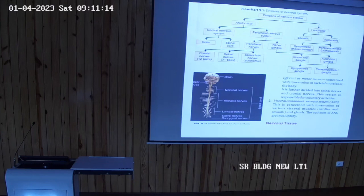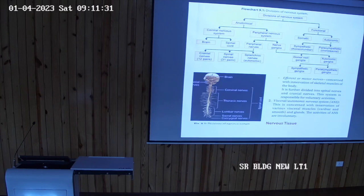If the cell body of the neurons is destroyed, there is no regeneration of the neurons. This is a very important point. If the cell body of the neuron is lost or damaged, there is no regeneration. Their number is approximately ten million neurons.